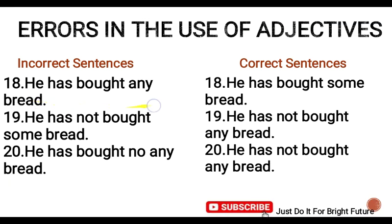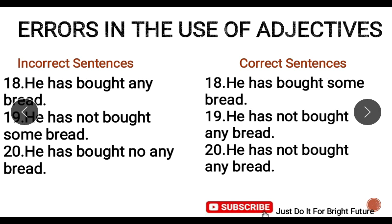Next errors relate to articles and quantifiers. For example: 'He has not bought some bread' is incorrect. When used with a negative sentence, we use 'any' instead of 'some.' The correct sentence is 'He has not bought any bread.' Similarly, 'You can buy some bread' in a negative or question context should use 'any': 'You can buy any bread.'